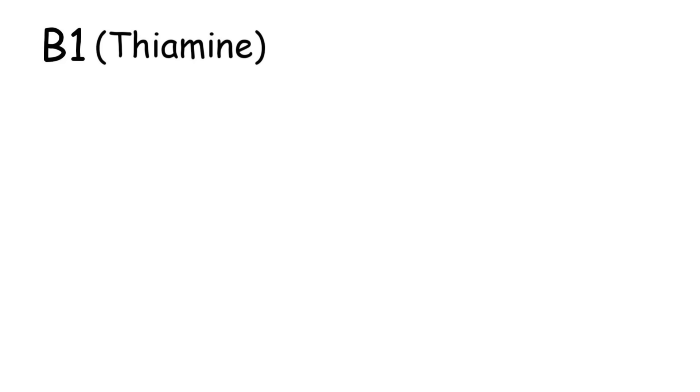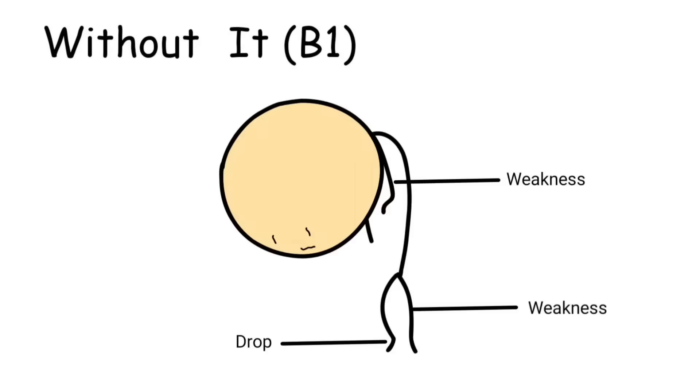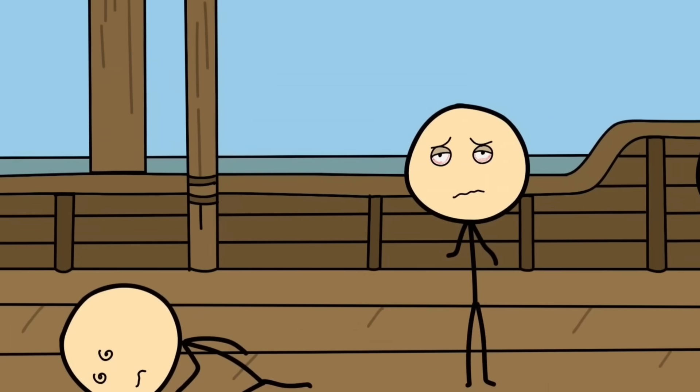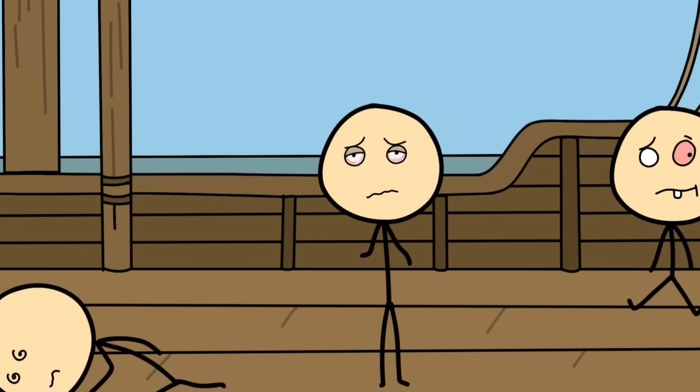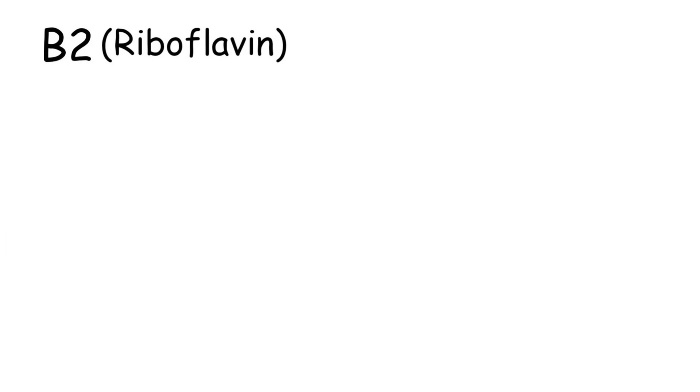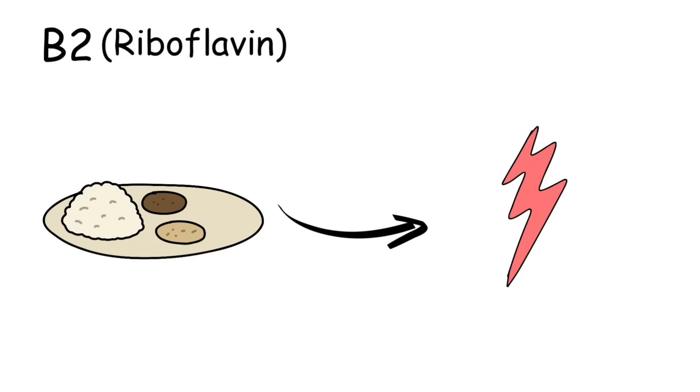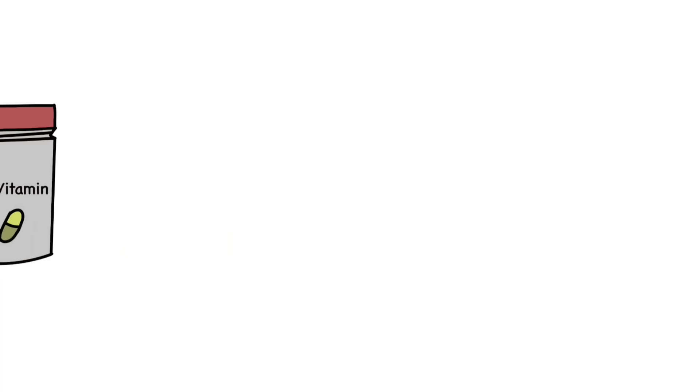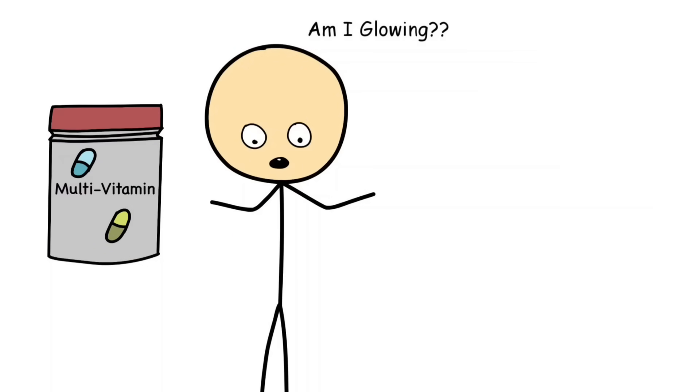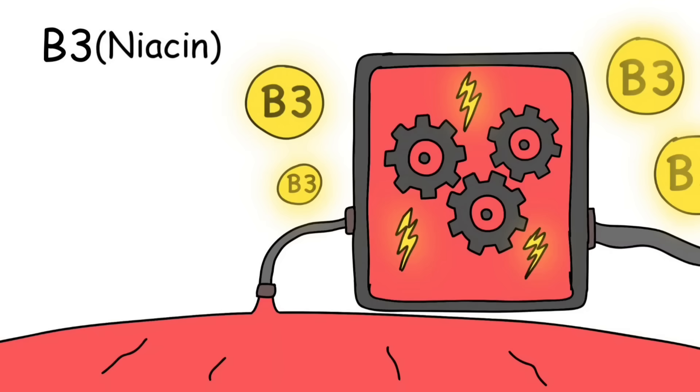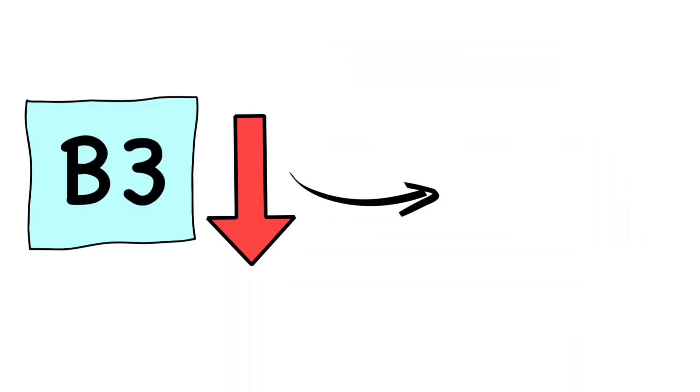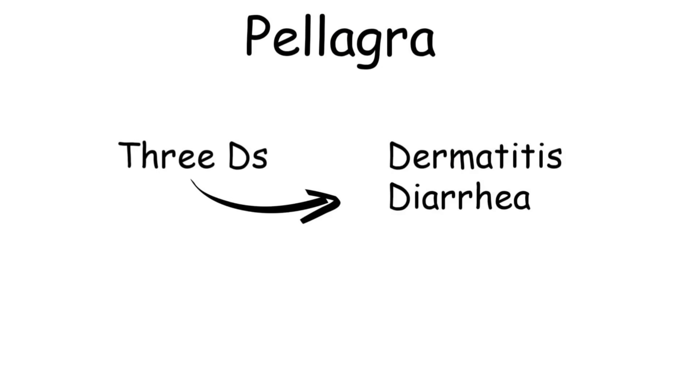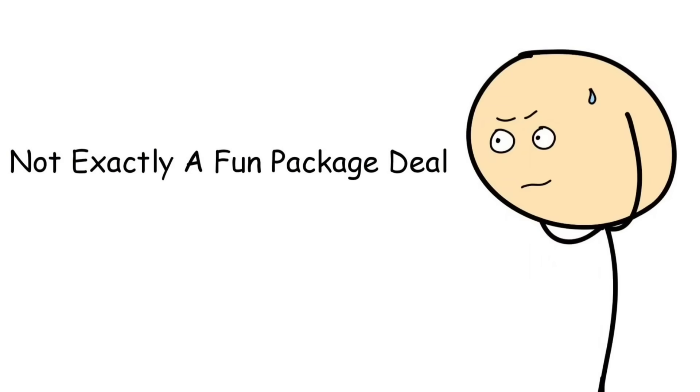B1, thiamine, keeps your nerves firing. Without it, you get beriberi, a disease that once wiped out sailors who ate nothing but polished rice. B2, riboflavin, helps turn food into energy. Fun fact, it makes your urine neon yellow. If you've ever taken a multivitamin and thought you were glowing, thank B2. B3, niacin, fuels metabolism. Deficiency causes pellagra, nicknamed the three Ds: dermatitis, diarrhea, and dementia. Not exactly a fun package deal.